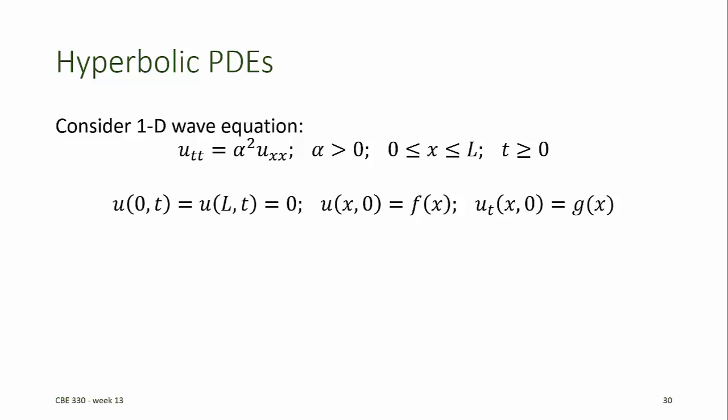Recall that when we solved elliptic PDEs, we solved them assuming we had boundary conditions at both the upper and lower bounds of both independent variables. When we solved the parabolic PDEs, we had boundary conditions in one dimension, the x dimension, and an initial condition in the t dimension.